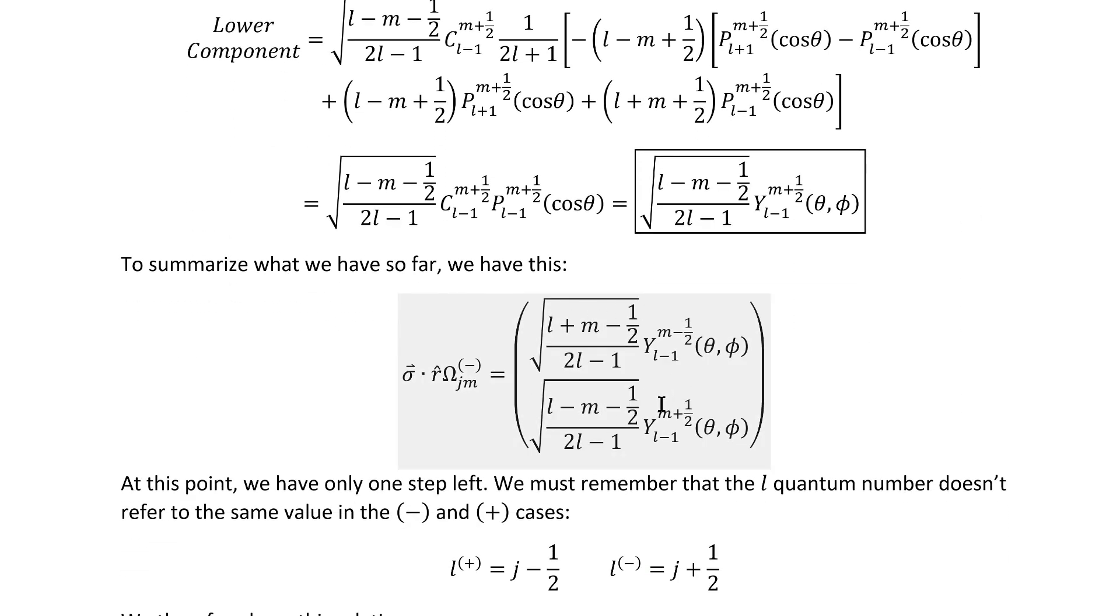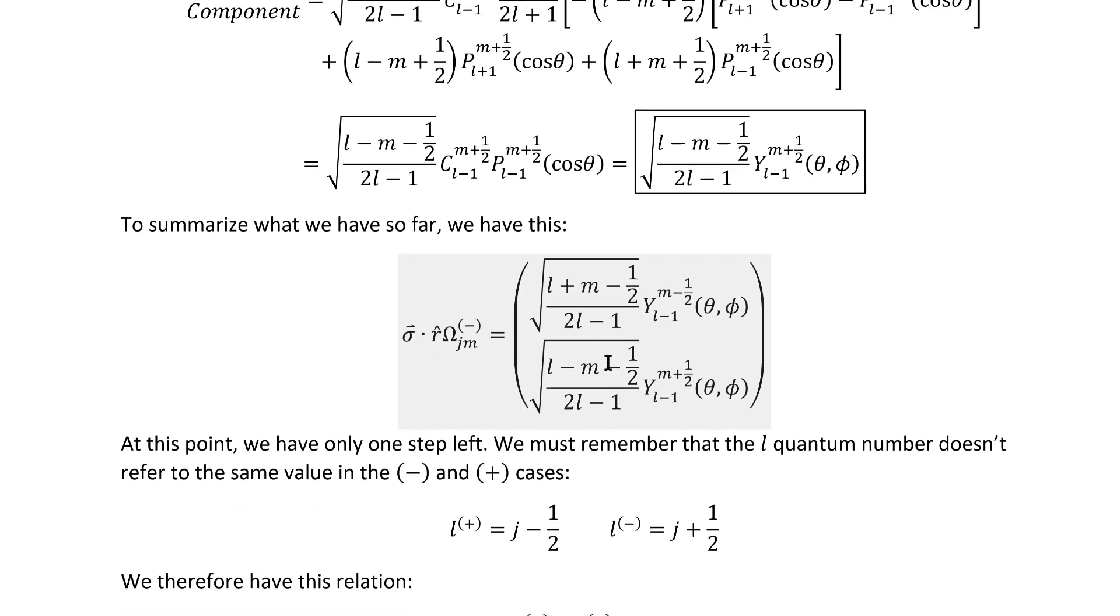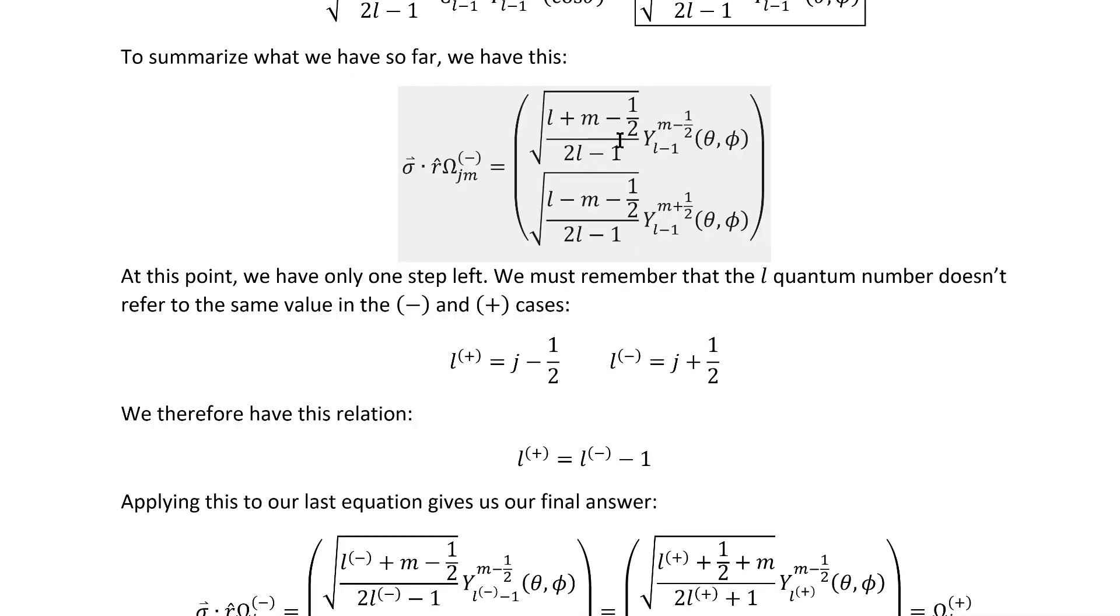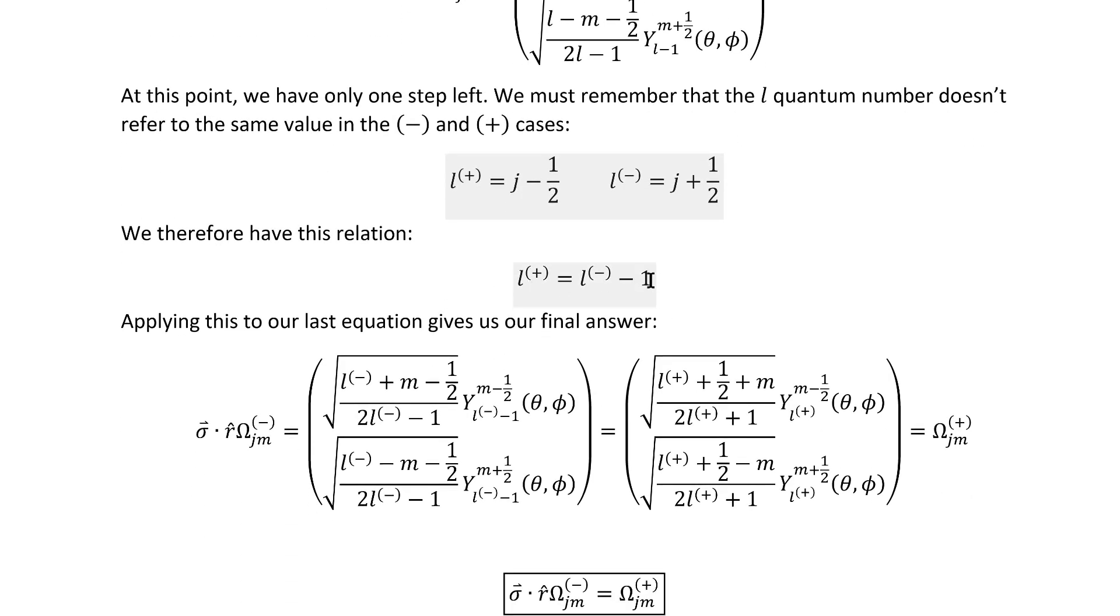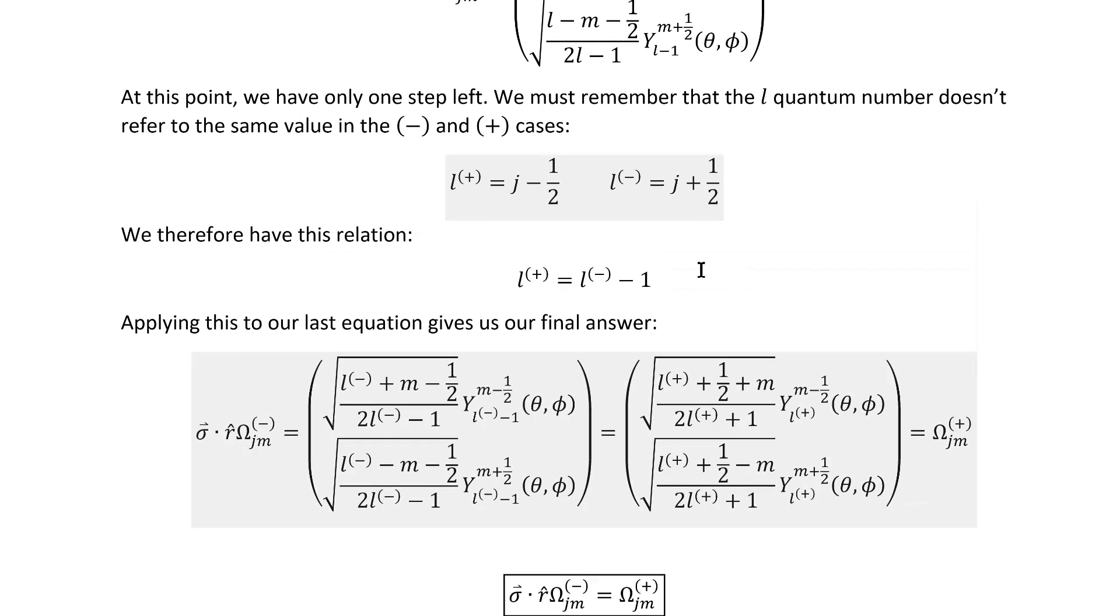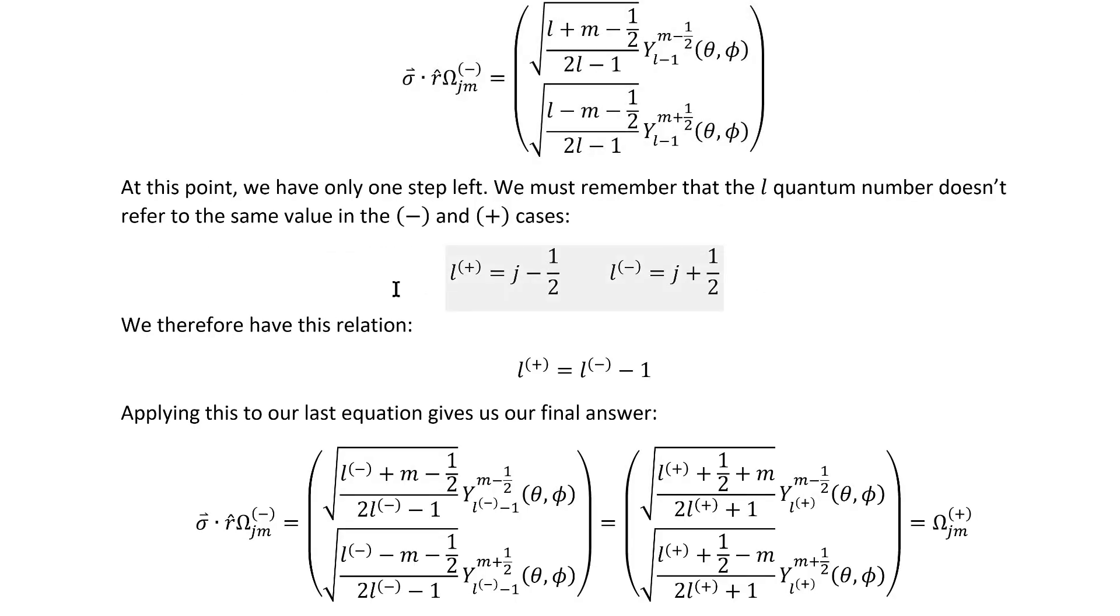To summarize, we have this result so far for the matrix operator in question applied to the minus-type spinor spherical harmonics. Now, the last step required to get this to look exactly like the plus-type spinor spherical harmonics is to remember that the L quantum number doesn't refer to the same value in the minus and plus cases. They refer to these values, which leads to this relationship between them.